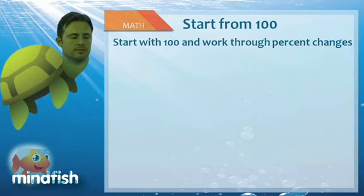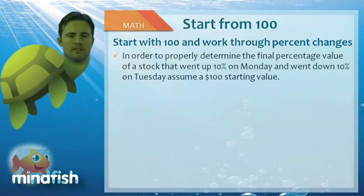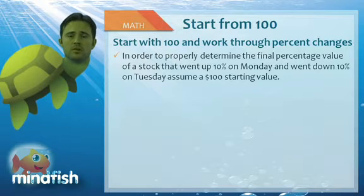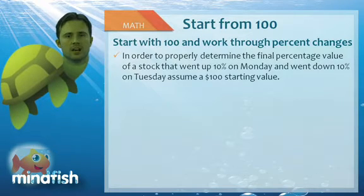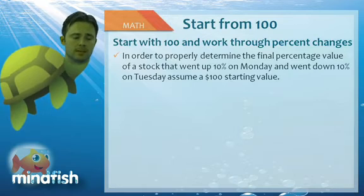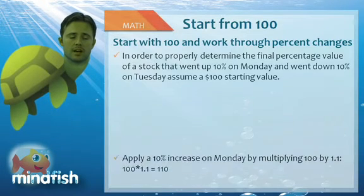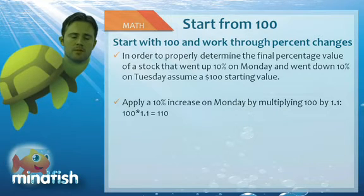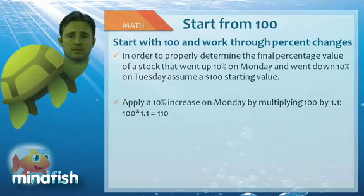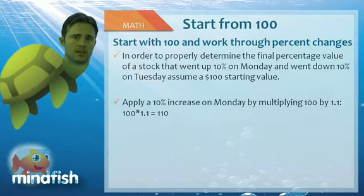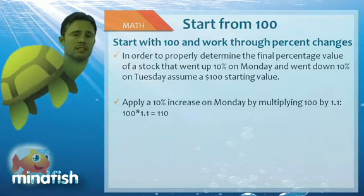The key to percentage questions is: if there isn't a number to start with, use the number 100, because it will make it easy to calculate the final result without doing one final unnecessary step. To properly determine the final percentage value of a stock that went up 10% on Monday and 10% down on Tuesday, start with $100. Raise it by 10% on Monday — that takes it up to 110. You can multiply by 0.1 and add it to 100, or multiply by 1.1. The 1 gives you your 100%, the 0.1 gives you the additional 10%, so that takes us to 110.